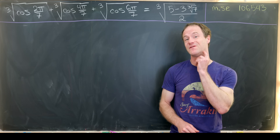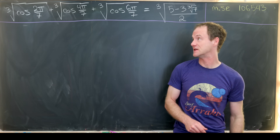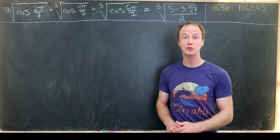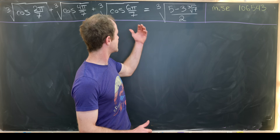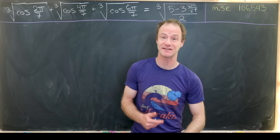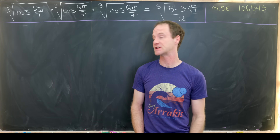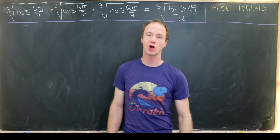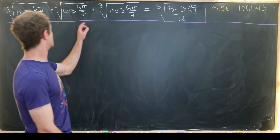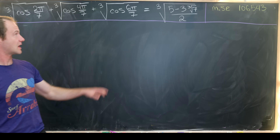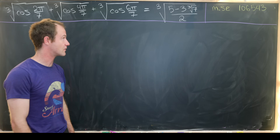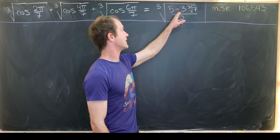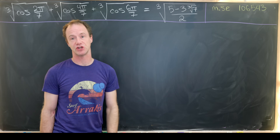Today we're going to look at one of Ramanujan's famous trigonometric identities, and this one involves cube roots and the angle 2π/7. On the right-hand side we have nested cube roots. The identity states: the cube root of cos(2π/7) plus the cube root of cos(4π/7) plus the cube root of cos(6π/7) equals the cube root of (5 minus 3 times the cube root of 7) over 2.